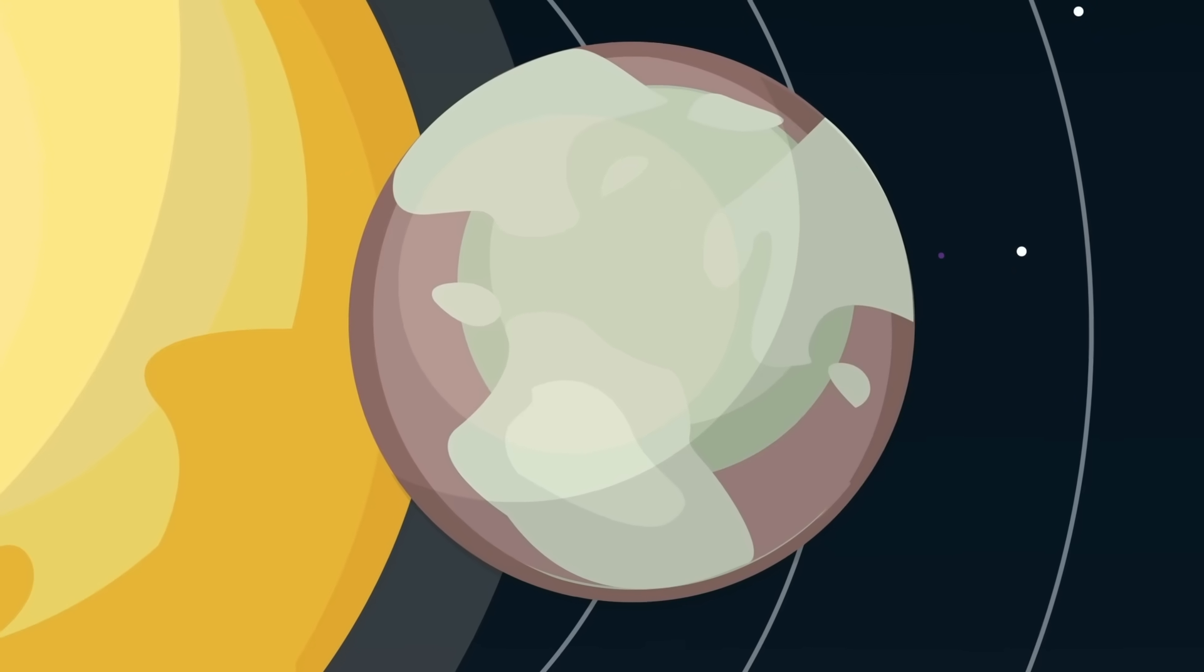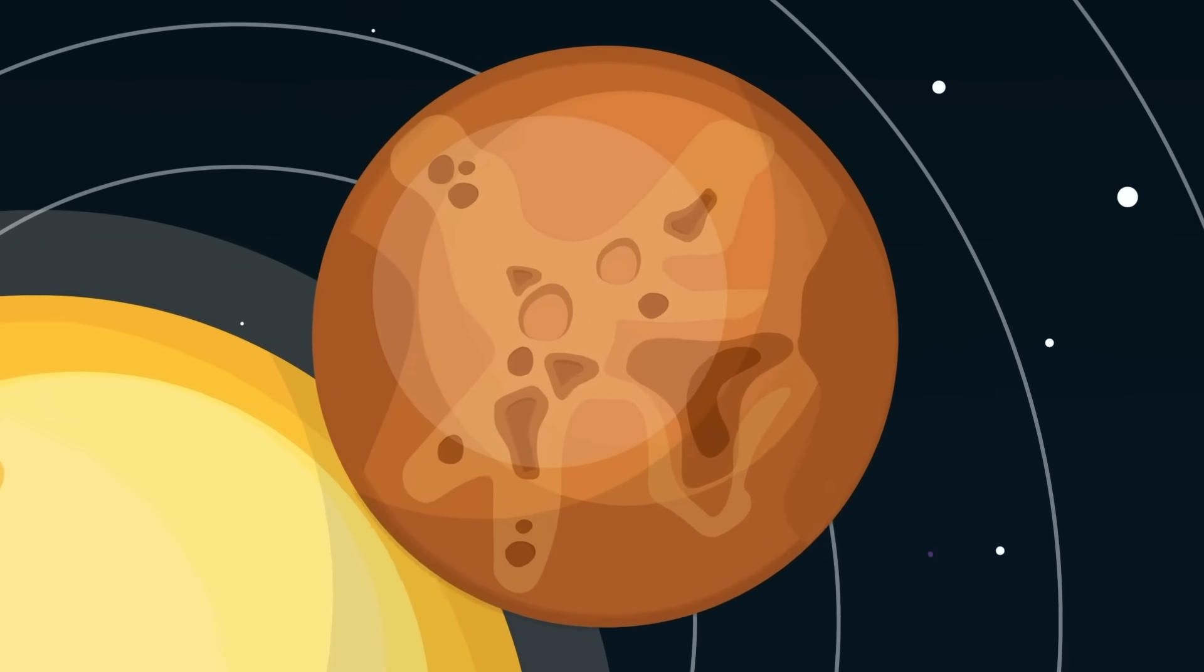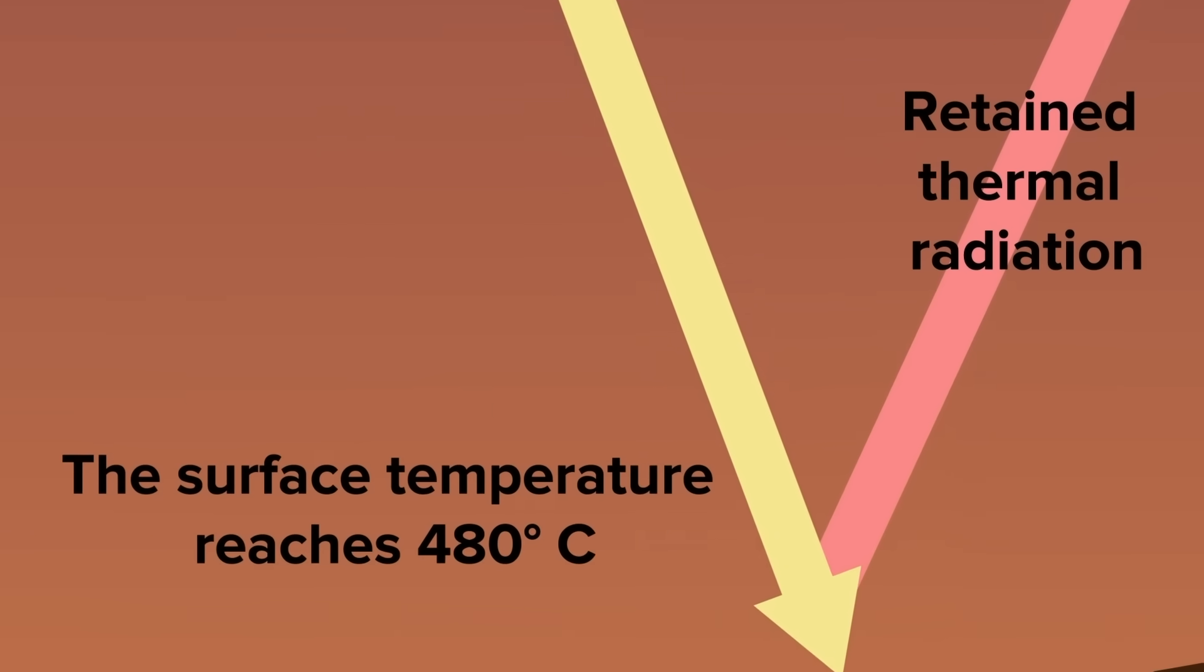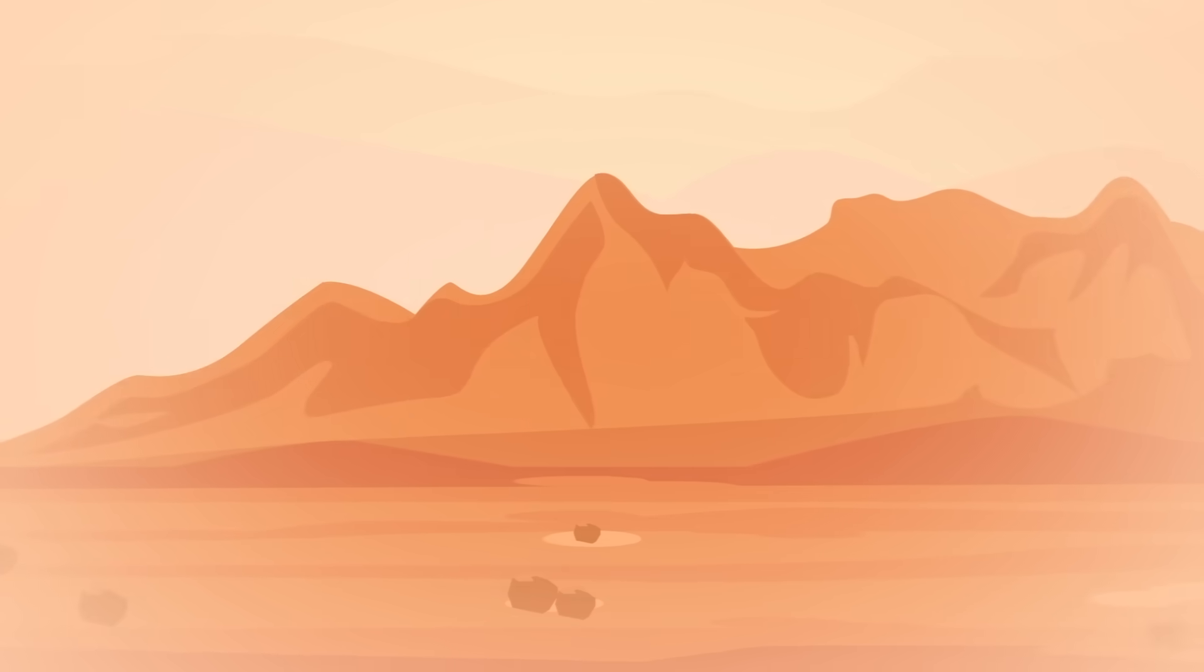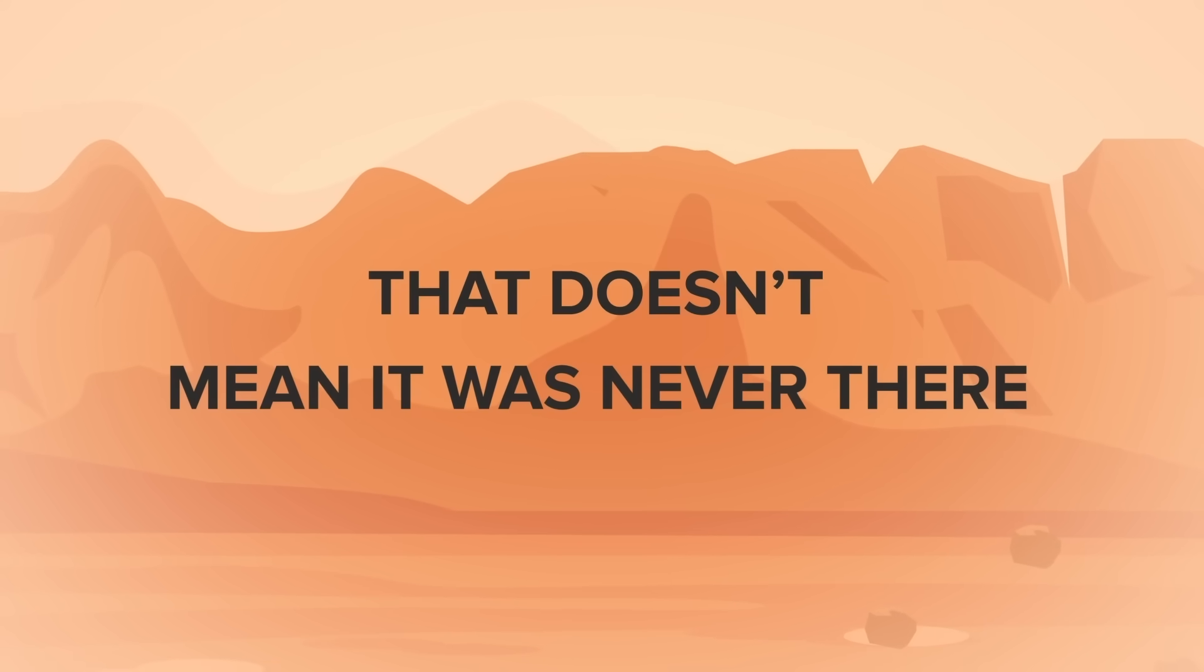Venus is known as chaotic, hot, and a toxic place where the atmosphere locks in the heat and makes it a deeply inhospitable place for life to exist. That makes water wildly unstable on its surface, with most of it evaporating quickly. But that doesn't mean it was never there.